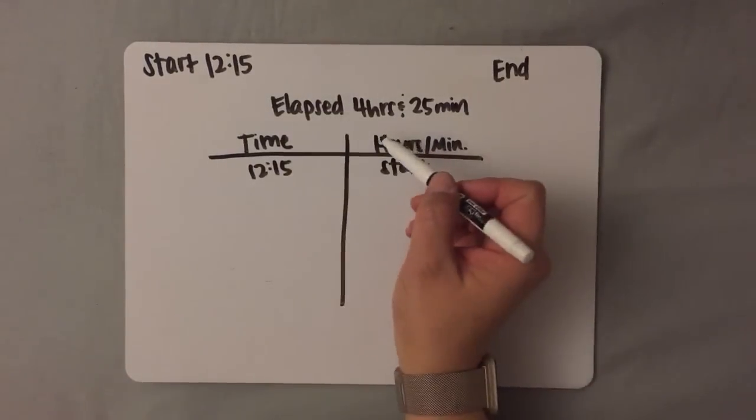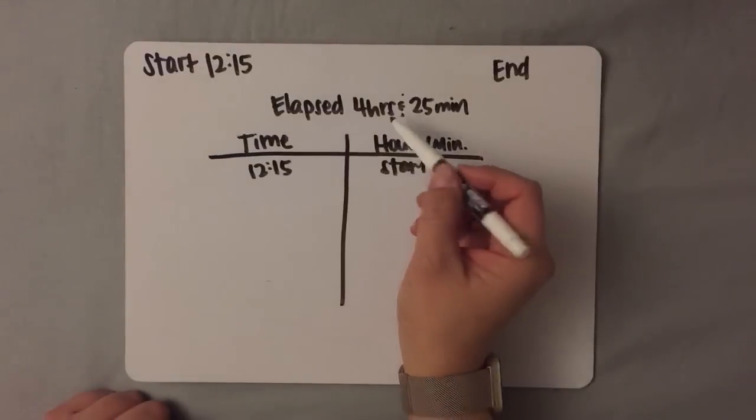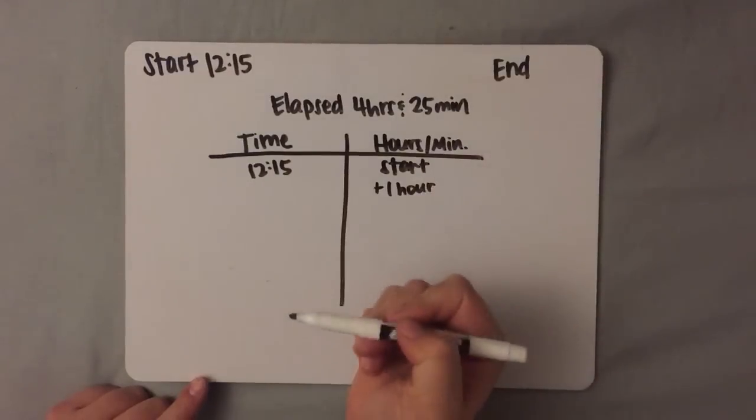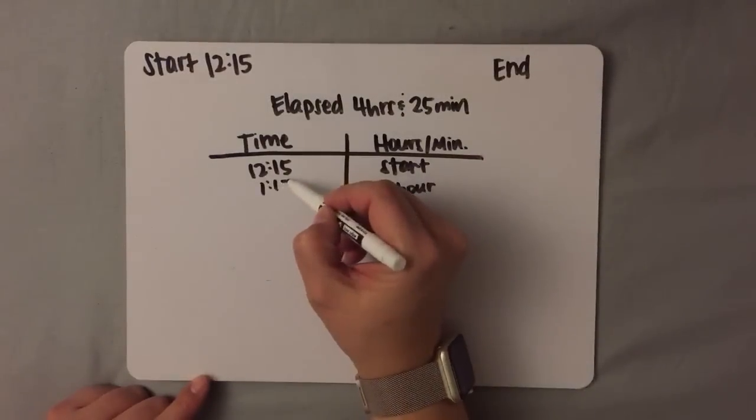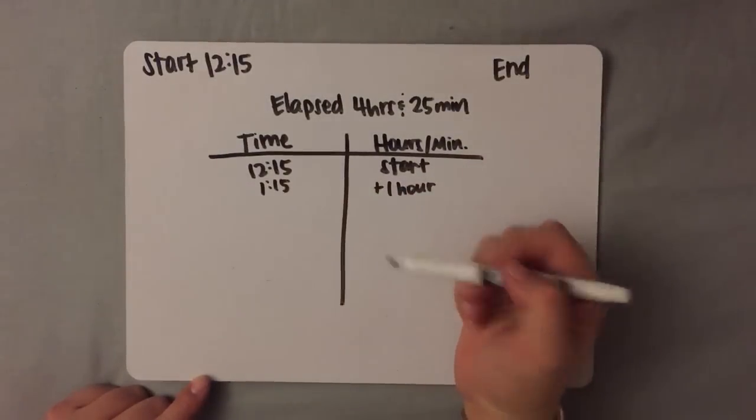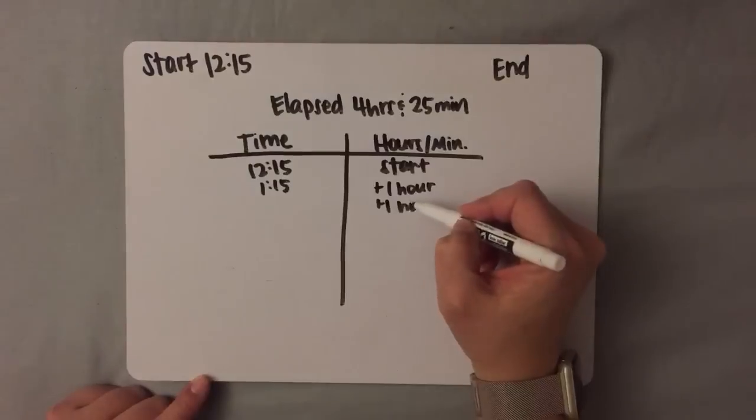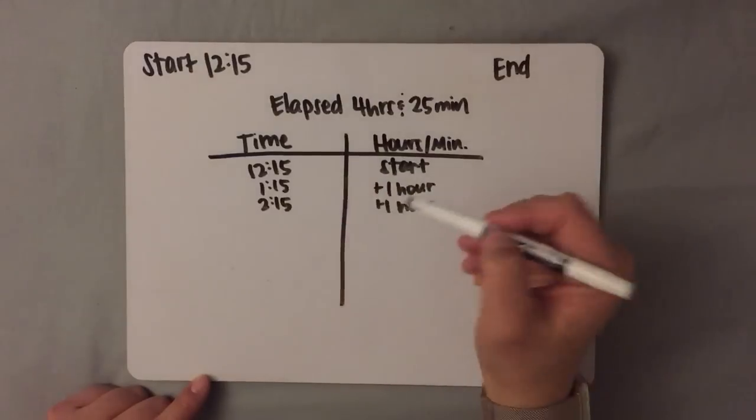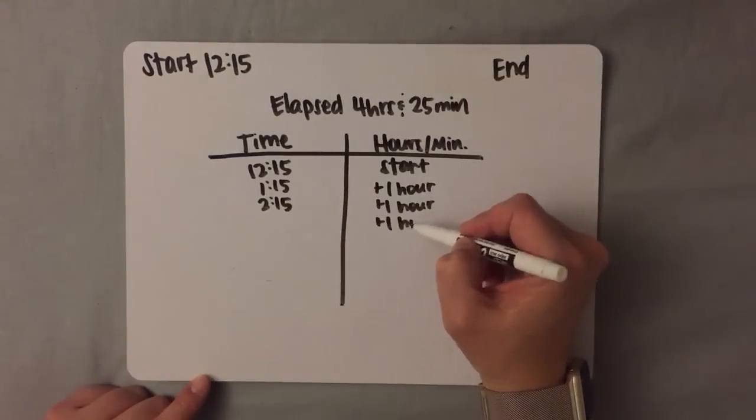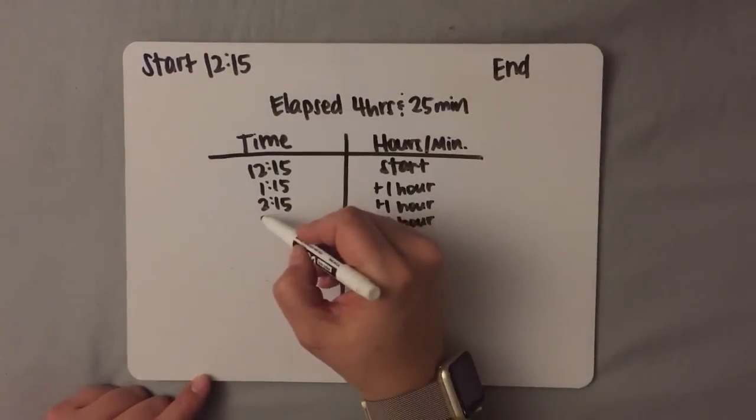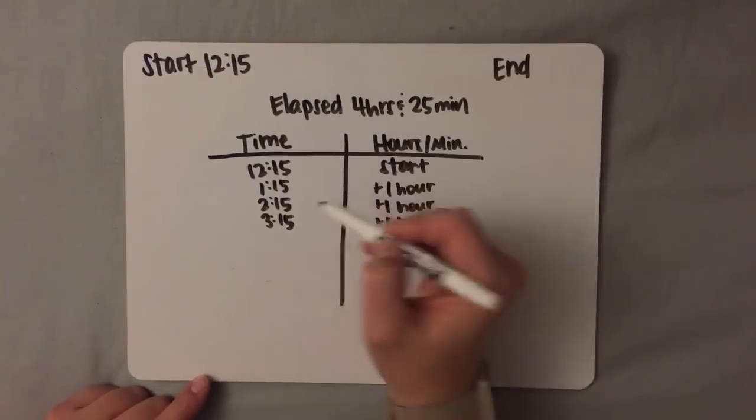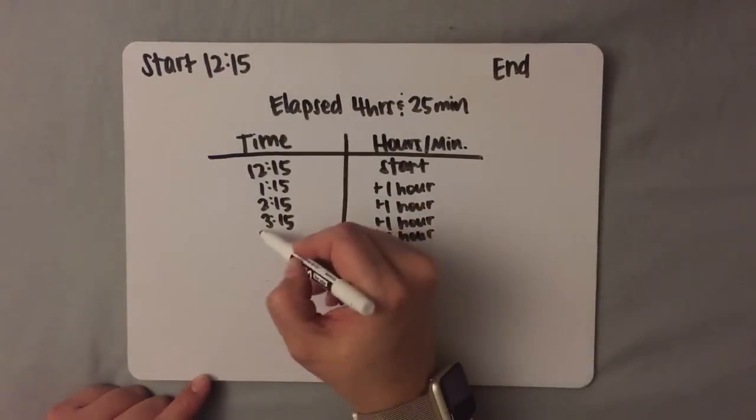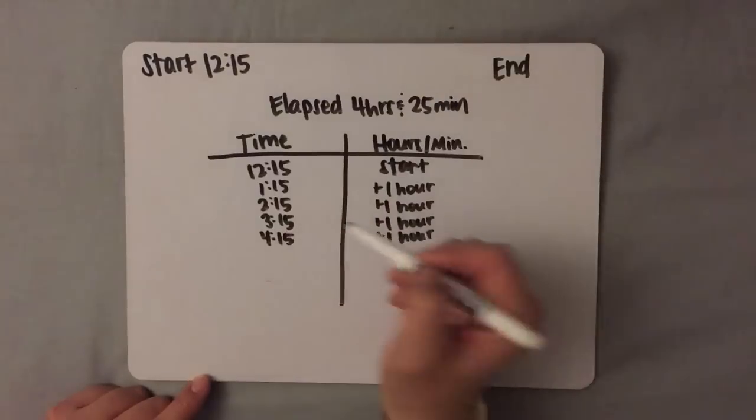So, I'm going to start with hours because that's pretty simple. If I add one hour to 12:15, it will be 1:15. If I add one more hour, it will be 2:15. If I do it again, it will be 3:15, and again, it will be 4:15.